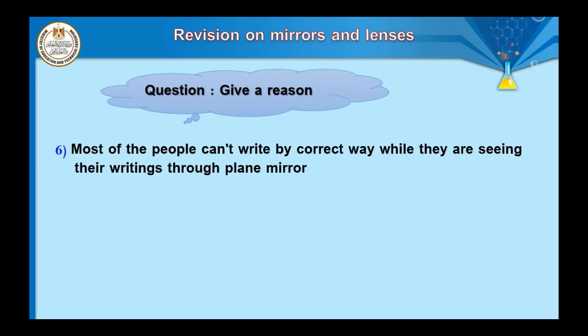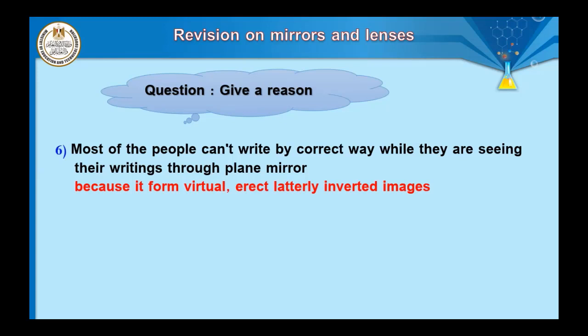Question number six: most people cannot write correctly while seeing their writing through a plane mirror. Because the plane mirror forms a virtual, erect, laterally inverted image. To appear correct, the word must be written in a laterally inverted way so it reads correctly in the mirror.